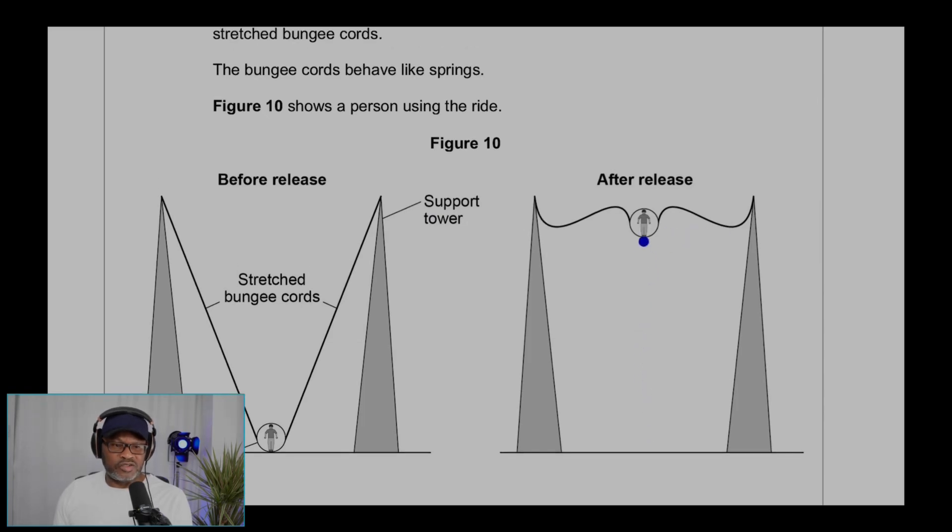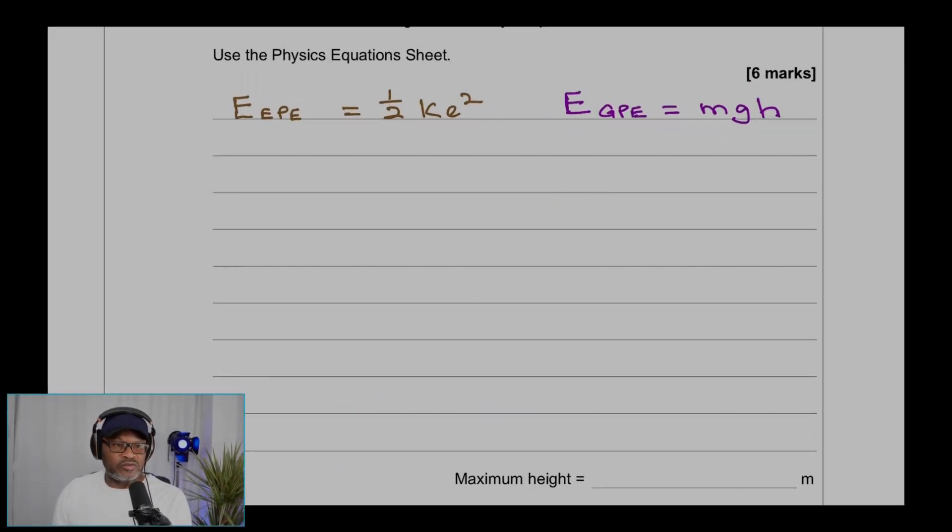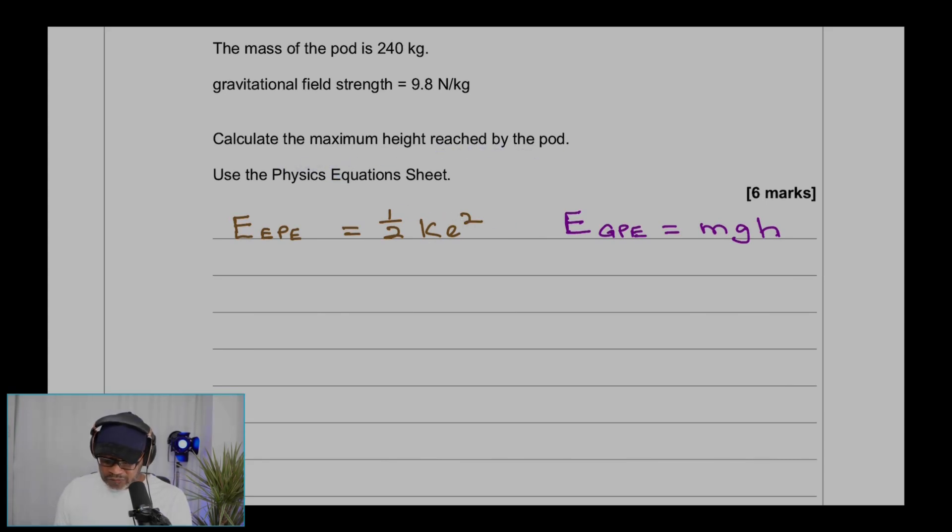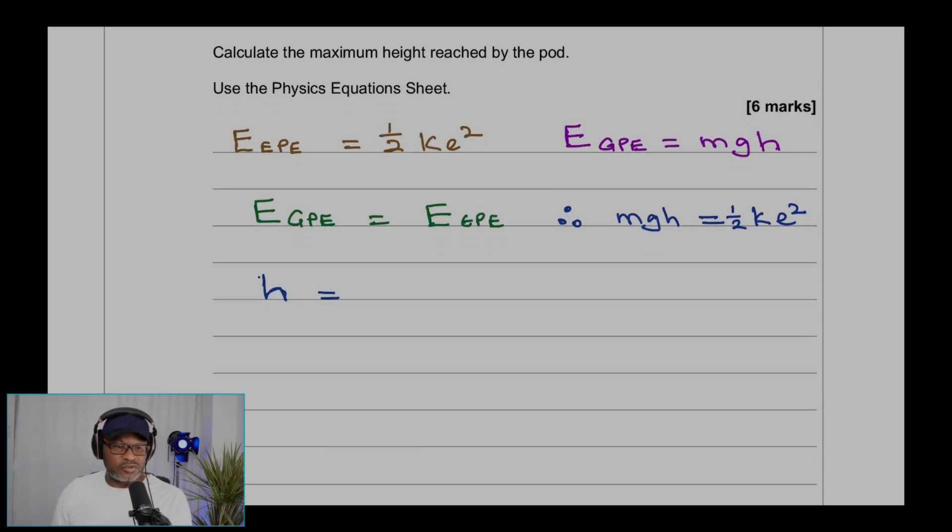We need to find the height h from the starting position to the maximum height. We equate the two energies together because the elastic potential energy is transferred into gravitational potential energy. Therefore, mgh = ½ke², and making h the subject: h = ½ke²/(mg) or h = 0.5ke²/(mg).